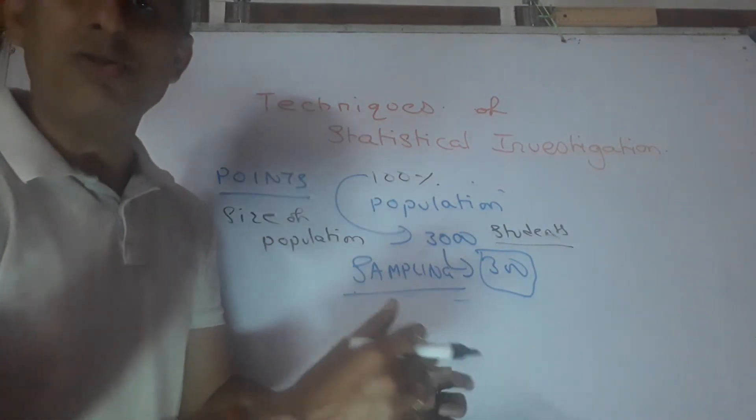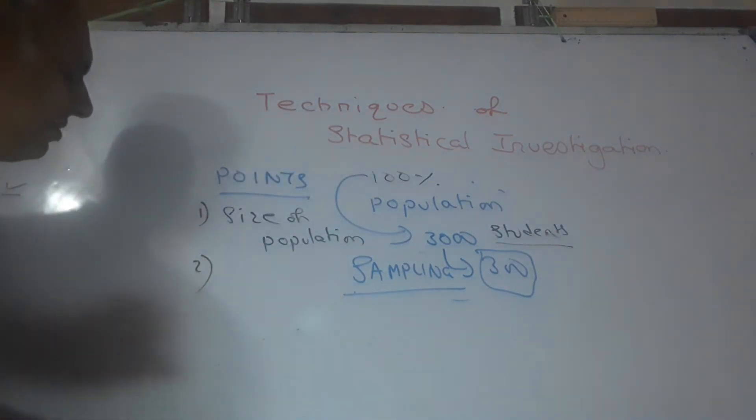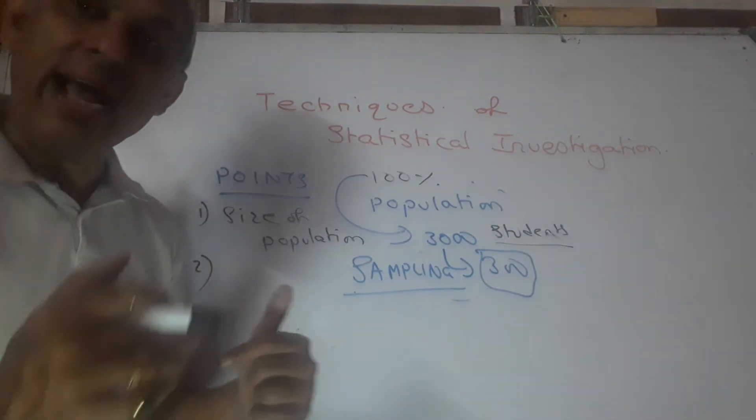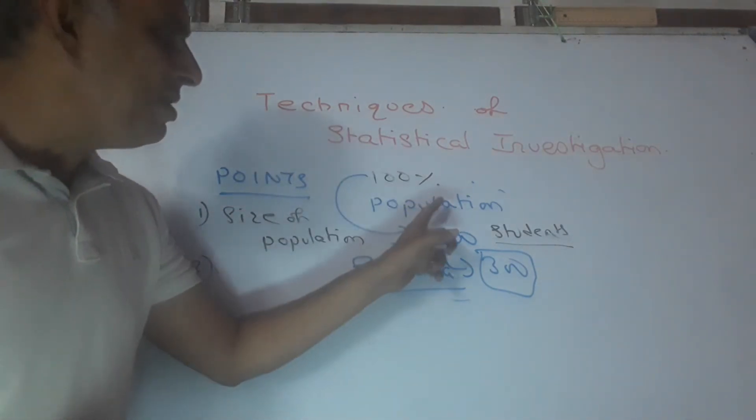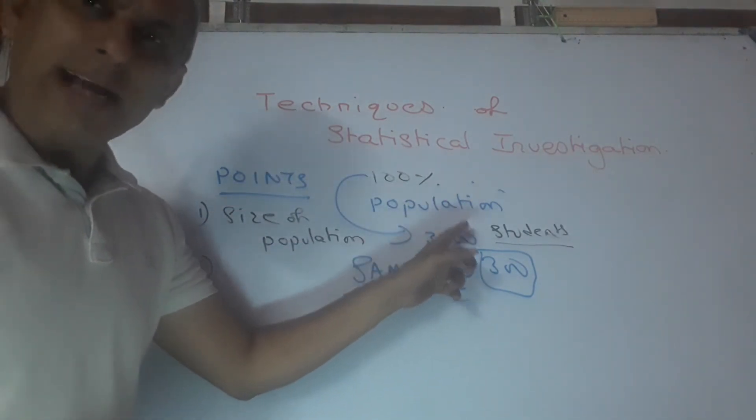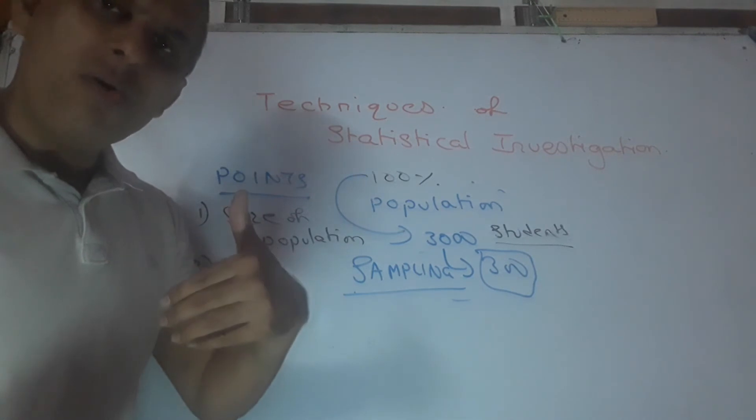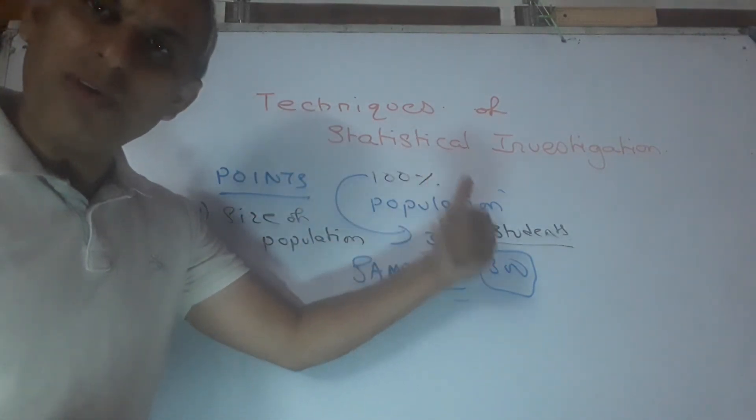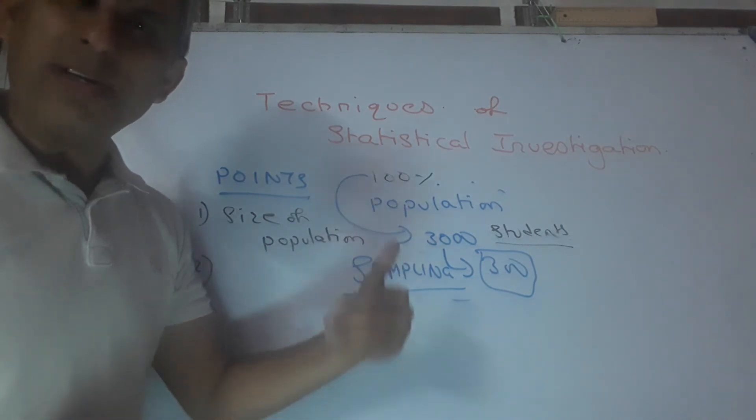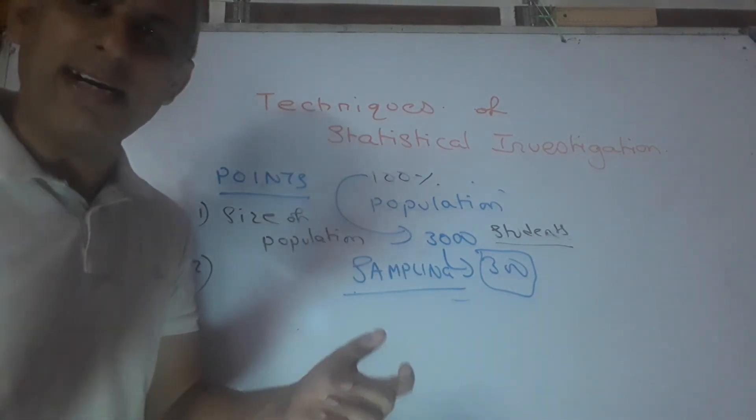Second point. What is the level of accuracy you want? Remember, the hundred percent accuracy or accurate result can be given only by census. But you can't, every organization can't do it. So what is your objective? To be close to what the answer the census would have given, or relatively close, or you just want to give an answer for the sake of giving the answers? Objectives differ.